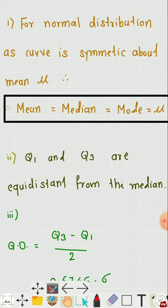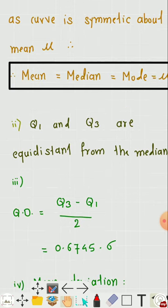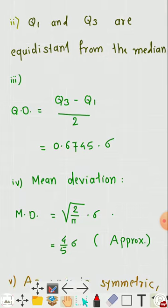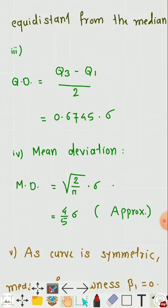The third property is the quartile deviation. The quartile deviation QD = (Q3 − Q1) / 2, and its value is approximately 0.6745σ. Hence the quartile deviation has a value equal to approximately 2/3 × σ.